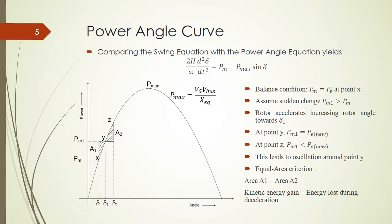In this case, we look at our equal area criterion, which says that A1 will equal A2 because the kinetic energy gained will equal the energy lost during deceleration. Here we assume that there is no loss in the winding or in the system, so the system will oscillate around Y like this.